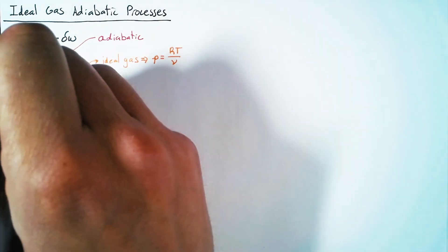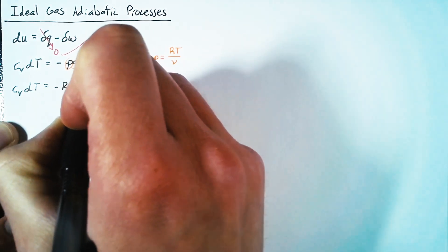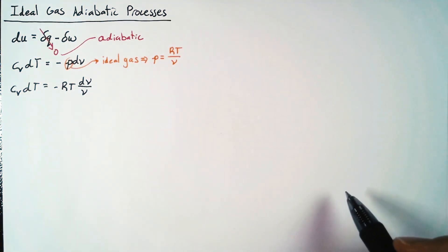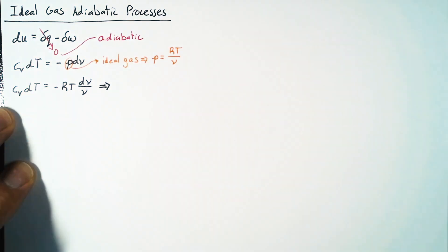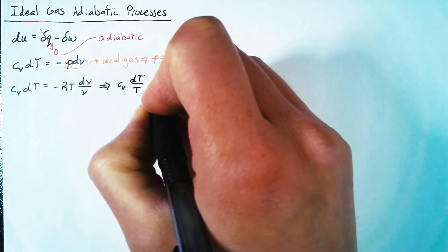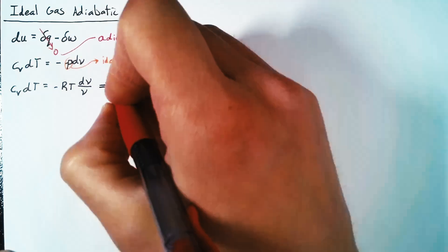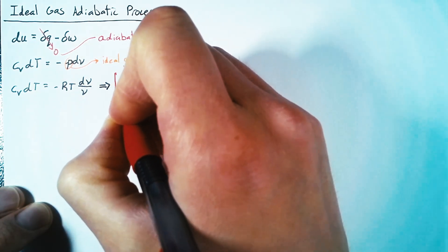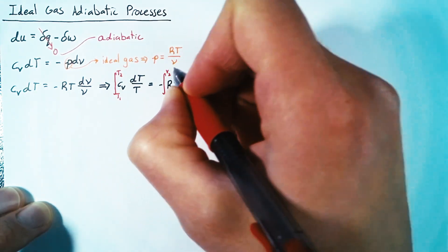So we can say that cv dT is equal to negative RT times dv over v. This form is nice because if we integrate, we'll end up with the natural log of v. Our next step is to divide T over, giving us cv times dT over T, which equals negative R times dv over v. We can then integrate both sides, specifying the bounds as moving from state 1 to state 2 — so T1 to T2 on the left, and v1 to v2 on the right.